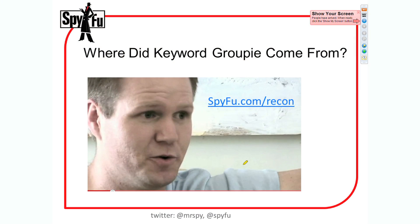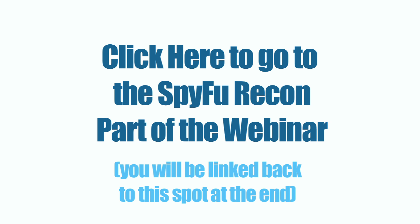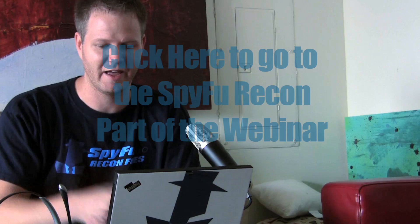So, where did Keyword Groupie come from? Keyword Groupie is actually an offshoot of a really big project that we're working on — SpyFu Recon Files. You can check out SpyFu Recon, sign up for the beta list, and there's a video on there that shows you what the overall concept of SpyFu Recon is. In about a month, you'll actually be able to get reports. You can imagine this process of breaking down 389,000 keywords for Home Depot into article-sized chunks — Keyword Groupie does that for you.